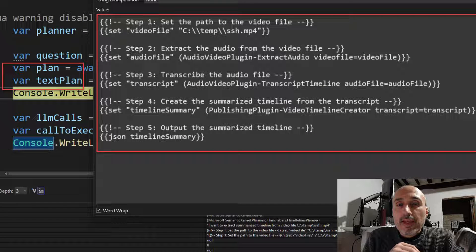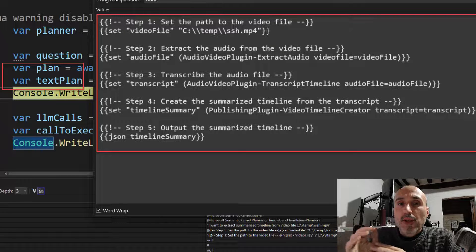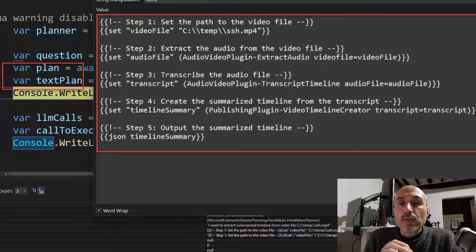As you can see, the interaction with the large language model is required only one call. After you call the create plan async, the large language model answers you with a handlebar template and handlebar is a special syntax to create a plan. And as you can see in this picture, it actually answers you with the whole plan.